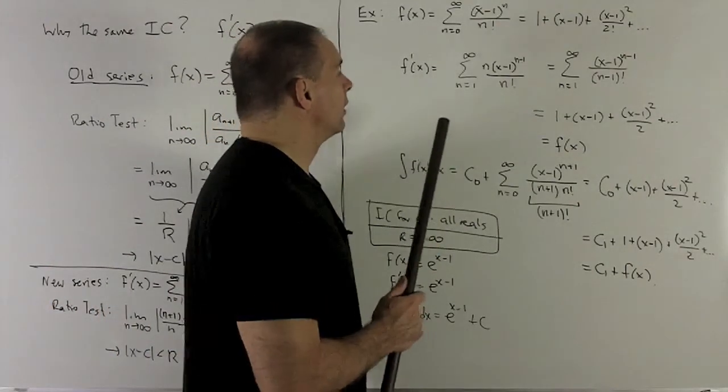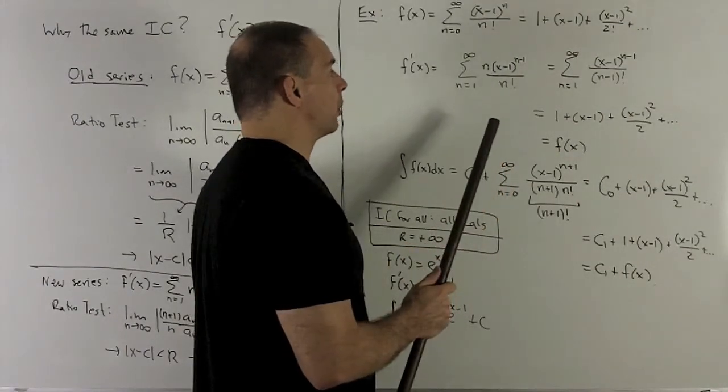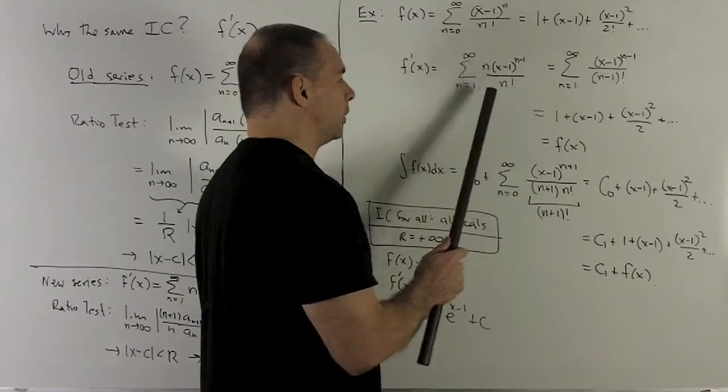I take the derivative, so the general term, I take the n and bring it down and then we're going to take 1 off the exponent. So when we simplify this, what do we note?